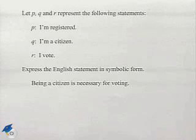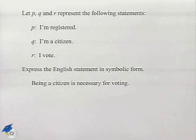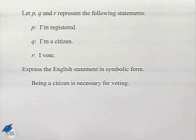Here's yet another example where we take an English statement and write it in symbols. Let P, Q, and R represent the following statements: P = I'm registered, Q = I'm a citizen, R = I vote. Express the English statement in symbolic form.